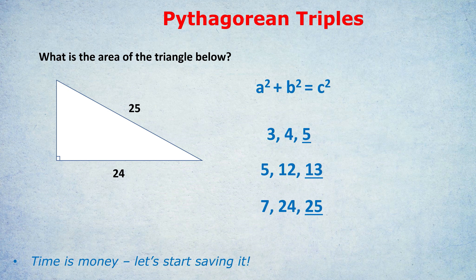The next one is 5-12-13: 25 plus 144 does equal 169. You can check any of these three triples on the calculator if you don't fully believe me. You don't have to memorize them just based on trust — they all work out perfectly. So how is it that they save so much time?